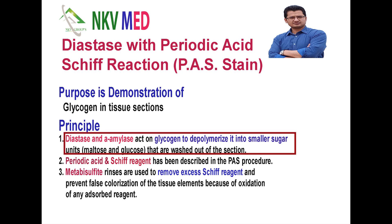So what is diastase? Diastase is an enzyme, also called alpha amylase. This enzyme breaks the glycogen into smaller sugars, which will wash out from the tissue section.